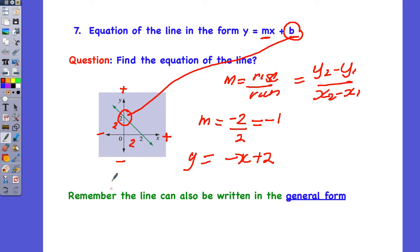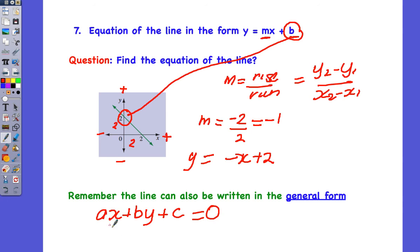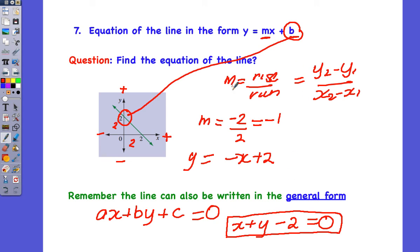The next thing asked is putting it in general form. General form is ax plus by plus c equals 0, with all terms on one side. So let's put y equals negative x plus 2 into general form. We want the x to be positive, so we add x to both sides to get x plus y, and then subtract 2 from both sides to get x plus y minus 2 equals 0. So this is general form, while y equals negative x plus 2 is the y equals mx plus b form.